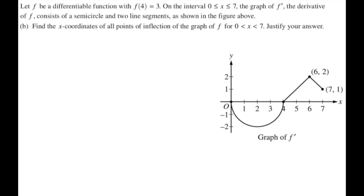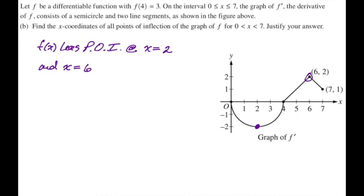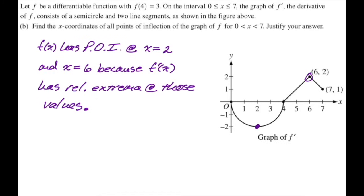For part B, find the x-coordinates of all points of inflection of f on 0 to 7. Since we're shown the graph of f prime, all places where f prime goes from increasing to decreasing or vice versa are points of inflection. At x equals 2 and x equals 6, f prime has relative extrema, so f has points of inflection at those values. I prefer to justify using relative extrema of f prime rather than sign changes.